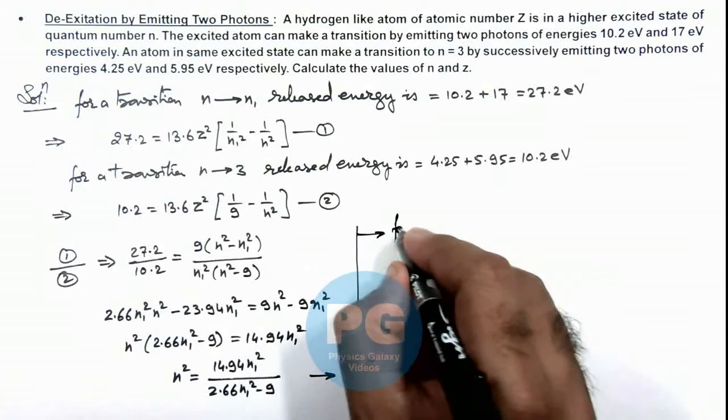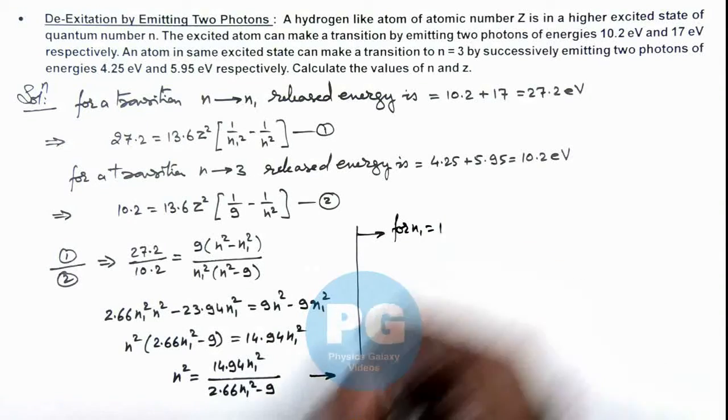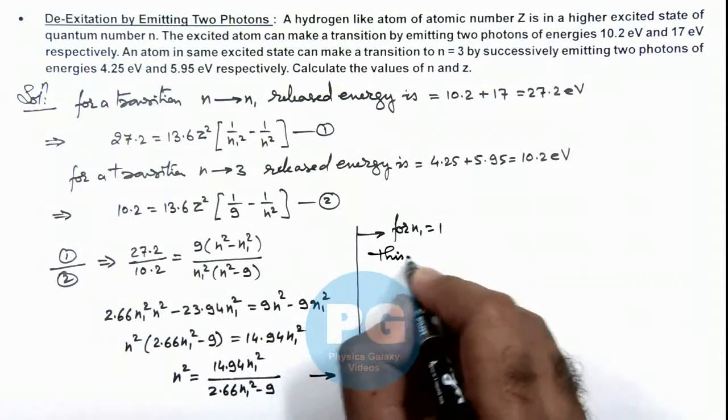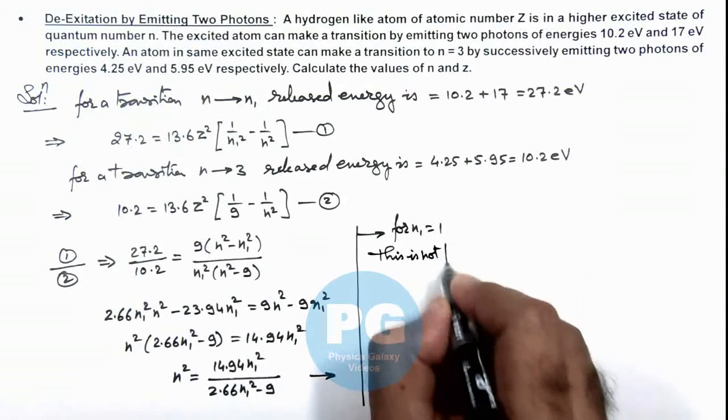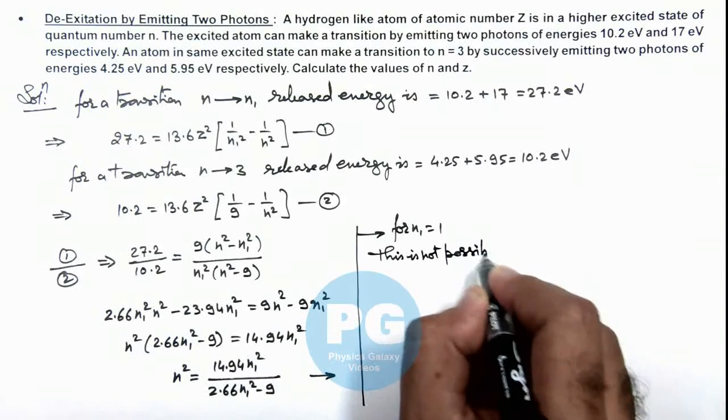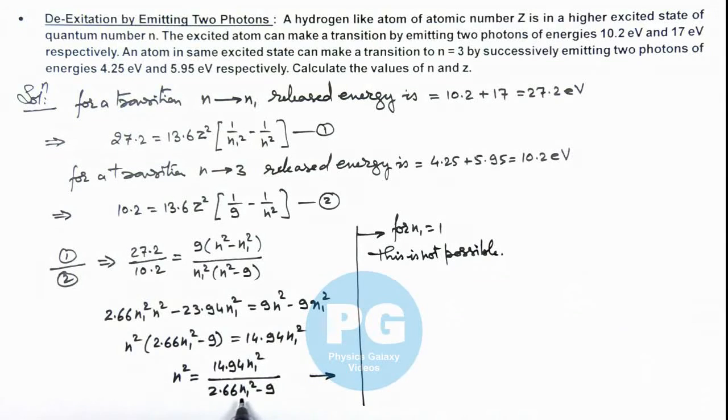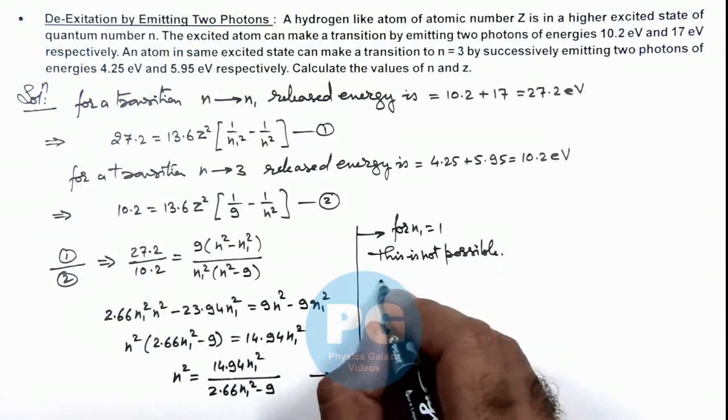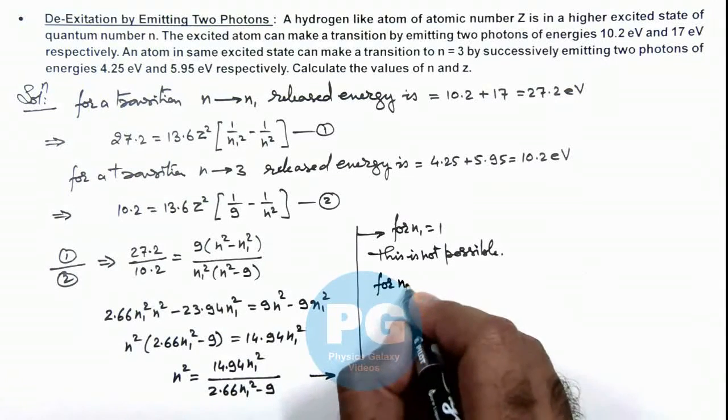for n1 is equal to 1 we can write this is not possible because if we substitute n1 is equal to 1 this square term is getting negative that is not possible. And if we substitute n1 is equal to 2,